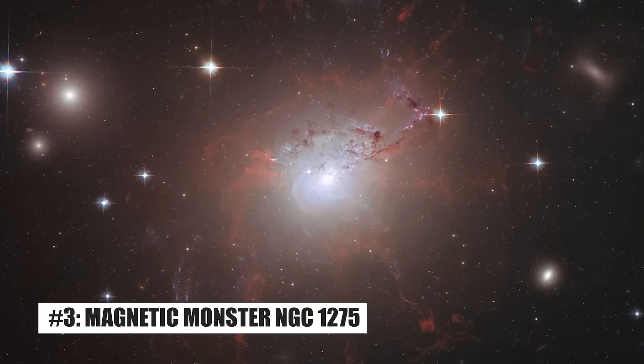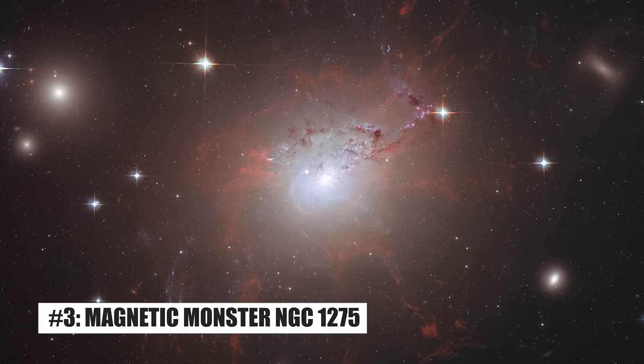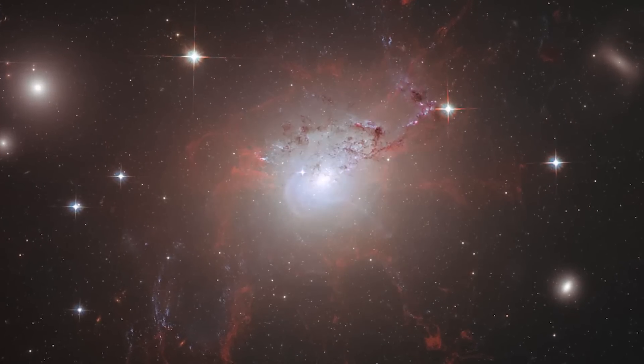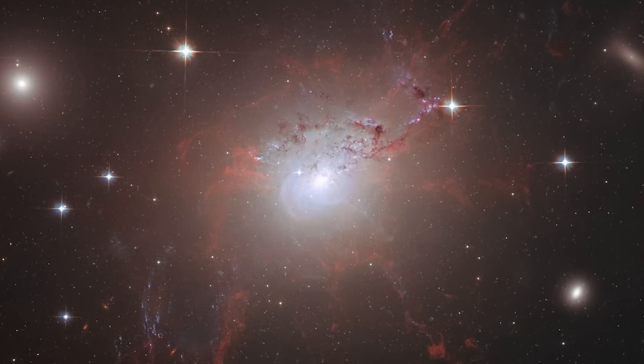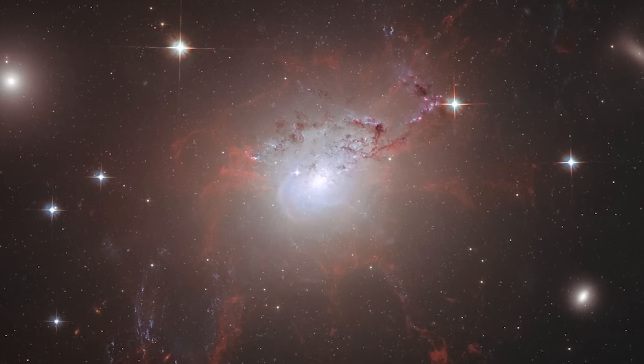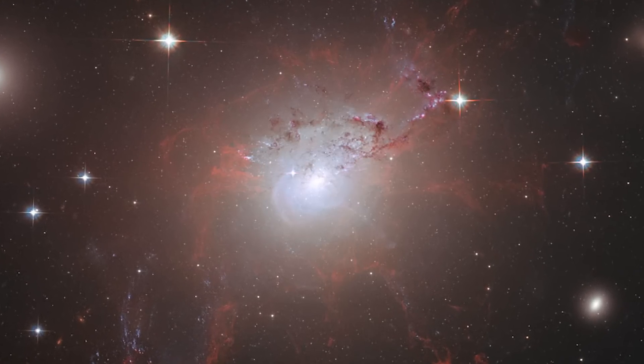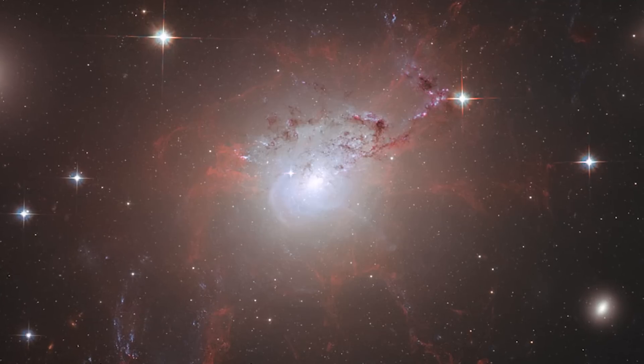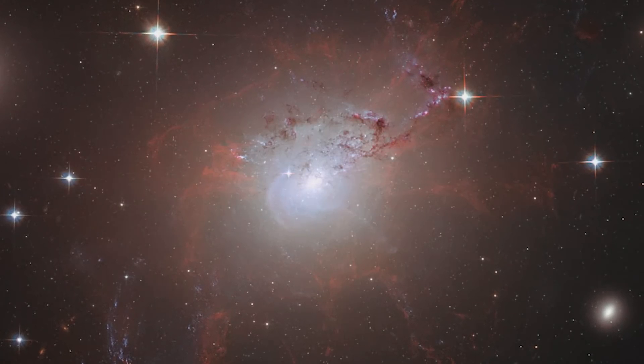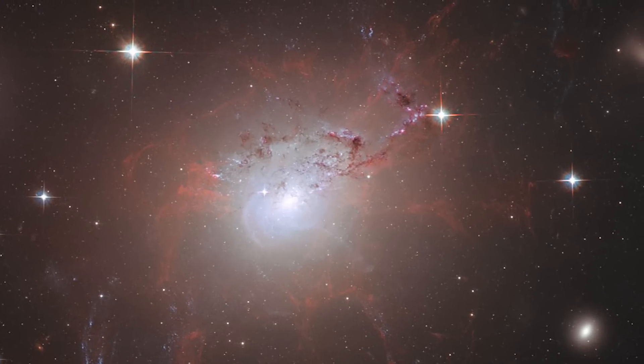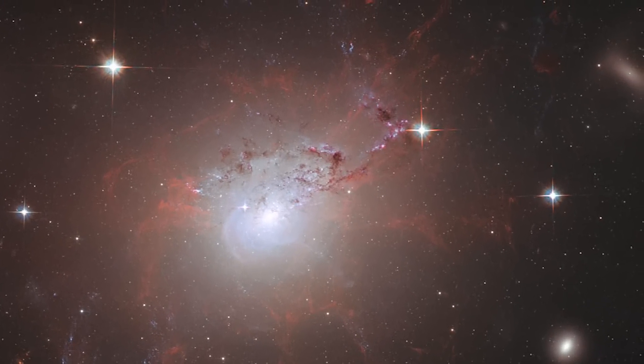3. Magnetic Monster NGC 1275. The observatory captured this magnificent photo of NGC 1275. Incredible clarity and resolution are seen in the image's reddish, lace-like filamentary formations, which surround NGC 1275's luminous core region. Despite being surrounded by gas that is almost 55 million degrees Celsius hot, these filaments remain cool.